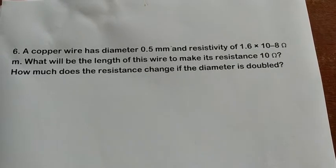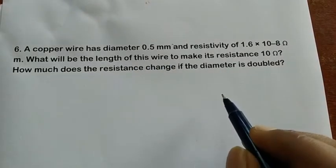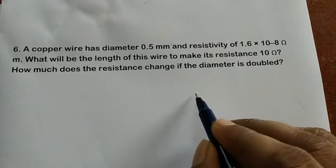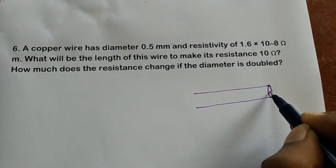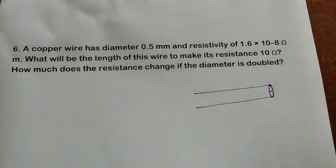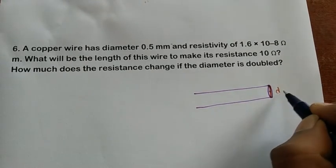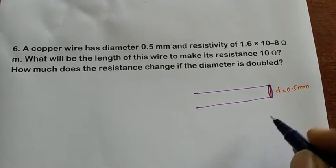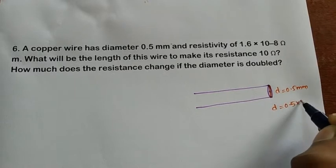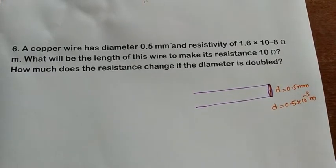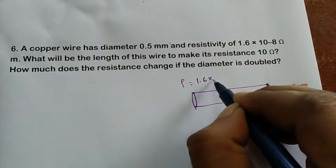A copper wire has a diameter of 0.5 mm and resistivity of 1.6 × 10⁻⁸ ohm·meter. The diameter of this wire is 0.5 mm, so in terms of meters, diameter d = 0.5 × 10⁻³ meters. The resistivity rho = 1.6 × 10⁻⁸ ohm·meter.